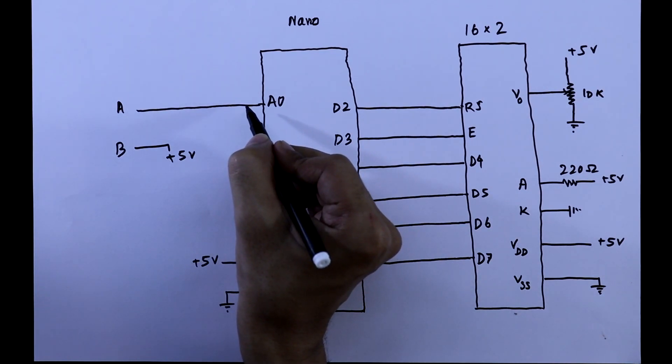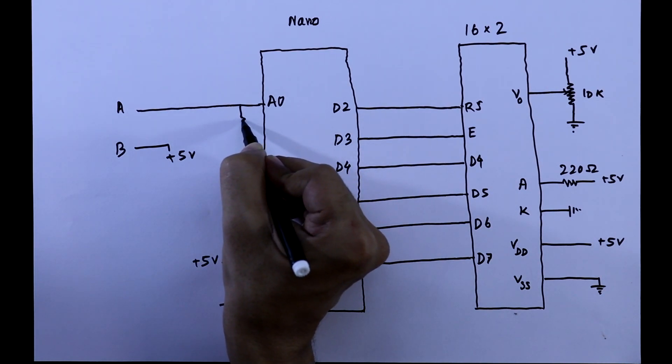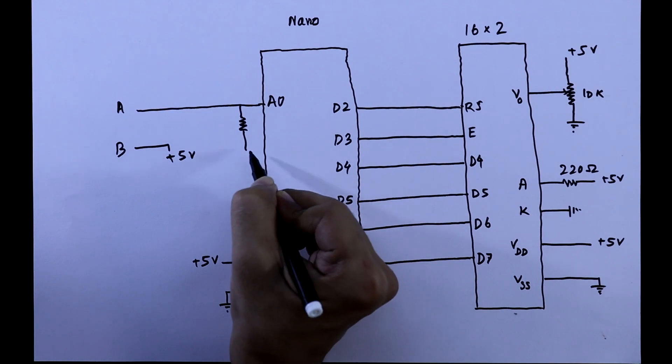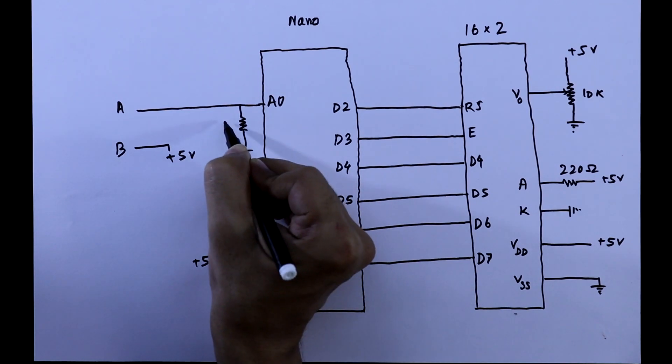And with the A0 pin, we have to connect a 1 kilo ohm resistor and then it is connected to the ground.